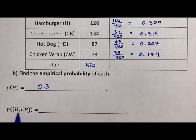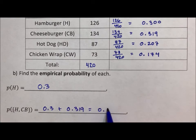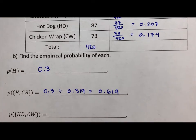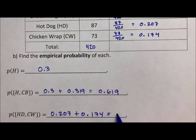Hamburger and cheeseburger - when you're looking for the probability of multiple things, you just add them together. So this is 0.3 plus 0.319, which will be 0.619. When we get to the next one where we're looking for the probability of a hot dog or chicken wrap, we have 0.207 plus 0.174, which comes out to 0.381.